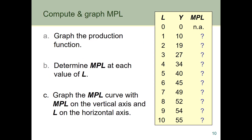We have a production schedule here where we're holding capital constant. So we have our levels of labour and the corresponding output. What we'll do first is to graph this production function with capital held constant and see its characteristics. Next we'll determine the marginal product of labour — we'll fill in these question marks — and then we'll graph the marginal product curve.